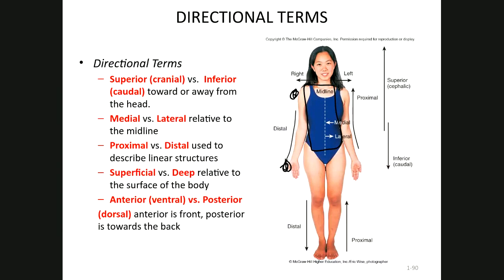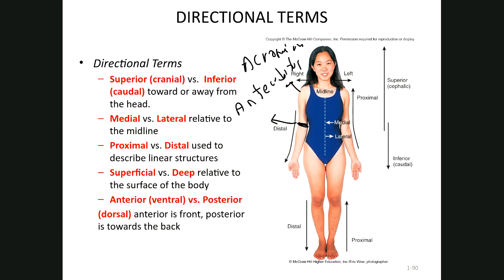For example, structures like the tip of the shoulder — called the acromion — and the anterior aspect of the elbow — called the antecubital area — are terms you should definitely know. You could say that the antecubital area is distal to the acromion, since the acromion is closer to the trunk. By the same token, the antecubital area is proximal compared to the palms of the hand, which are distal.